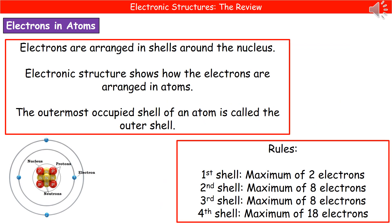So now if we go on to consider how the electrons are arranged in atoms. As we've already discussed back in C1, the electrons are actually arranged in shells around the nucleus. The actual electronic structure shows how those electrons are arranged. So when we're talking about this, we're going to use this phrase, outer shell. That's just referring to the outermost occupied shell of the atom.